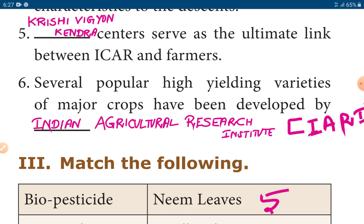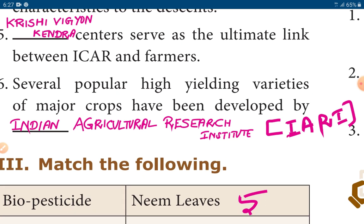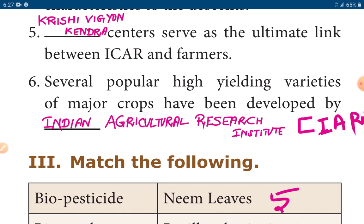Sixth one: Several popular high-yielding varieties of major crops have been developed by IARI — Indian Agricultural Research Institute.